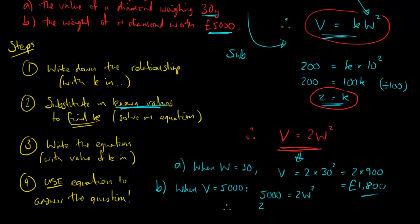And again I'm going to solve this. The only difference is I'm going to have to do a square root at the end. So if I divide by 2, 2,500 is w squared. And as I said we'll square root that to work out what w is. So the square root of 2,500 is simply 50. So if it's worth 5,000 pounds it weighs 50 grams.